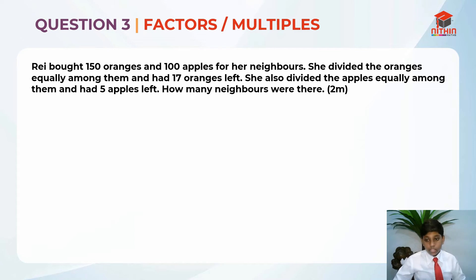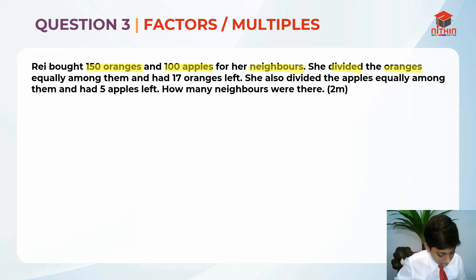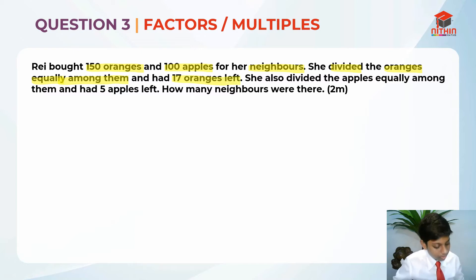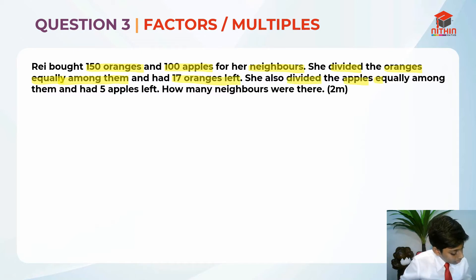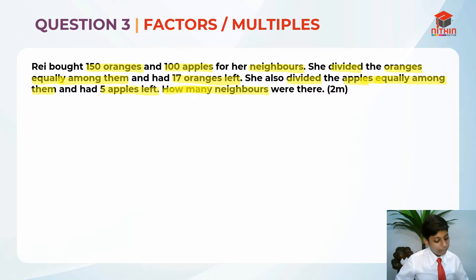Since we have read the question, let's highlight the key information. Ray bought 150 oranges and 100 apples for her neighbours. She divided the oranges equally among them and had 17 oranges left. She also divided the apples equally among them and had 5 apples left. How many neighbours were there? This is the key information.